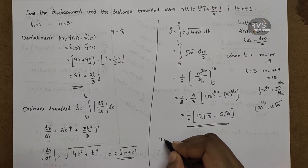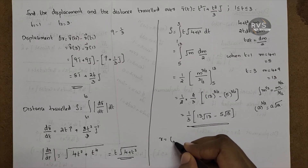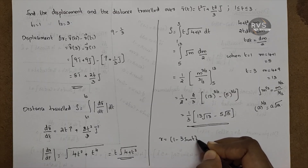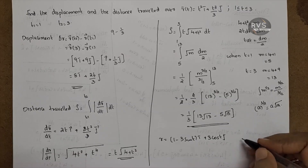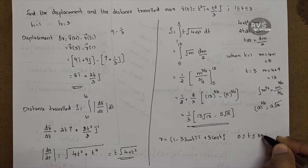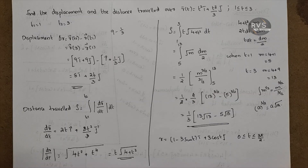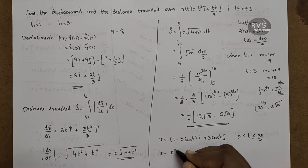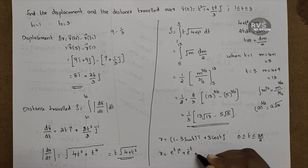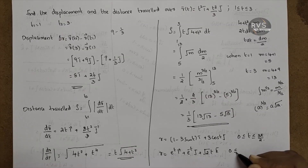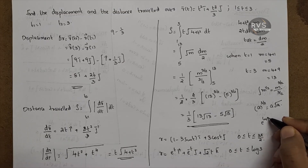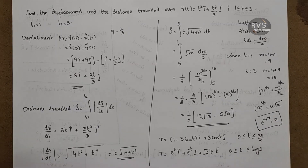Exercise problems: First, r = (1 - 3sin(t))i + 3cos(t)j for 0 ≤ t ≤ 3π/2. Note that sin(3π/2) = -1 and cos(3π/2) = 0. Second, r = e^t·i + e^(-t)·j + √2·t·k for 0 ≤ t ≤ log 3, using the identity e^(log x) = x.